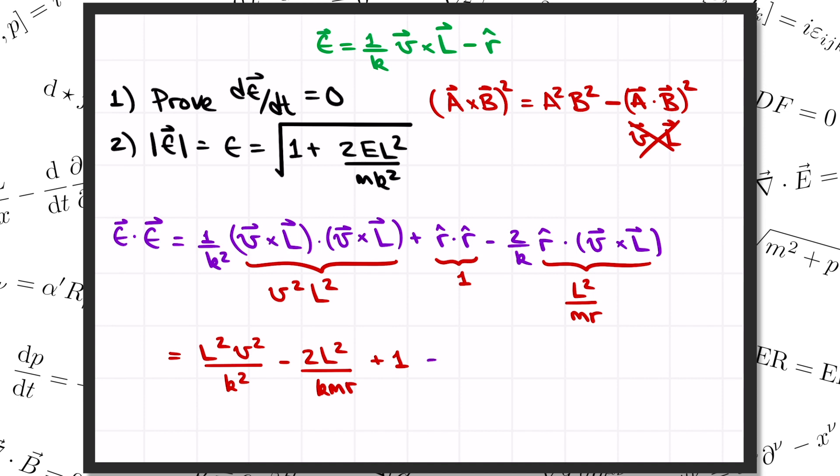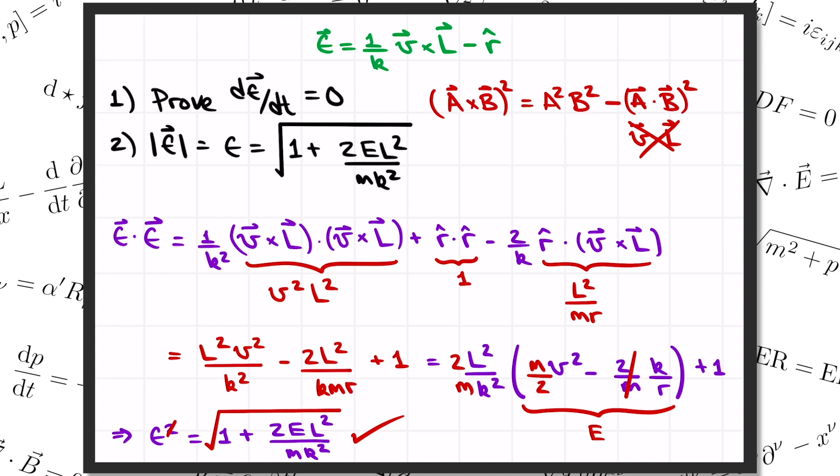So we get l squared v squared divided by k squared minus 2l squared over km r plus 1. We can write that a little more conveniently by pulling a factor of l squared over k squared out front. Then inside the parentheses, we have v squared minus 2 over m times k over r, and all that plus 1 again. I also want to pull out this factor of 2 over m. So let me pull that out front, and then I have to multiply v squared by m over 2. But now lo and behold, the quantity in parentheses here is just the total energy E of the planet. So we get epsilon squared equals 1 plus 2el squared over mk squared. And if we take the square root, we indeed reproduce the same formula from before for the eccentricity epsilon of the planet.